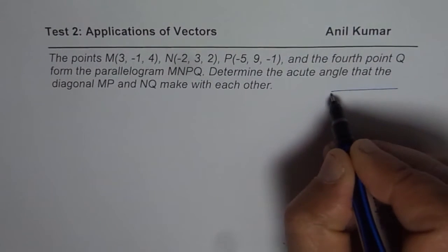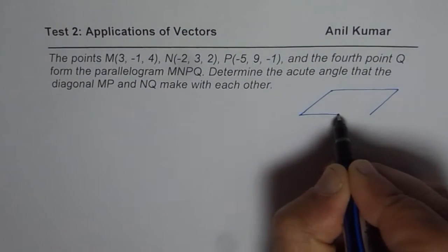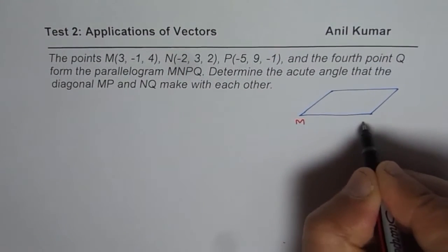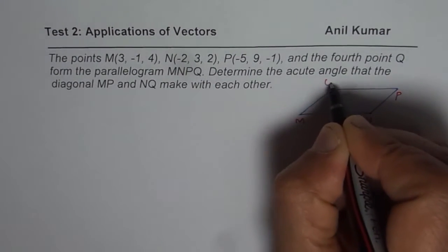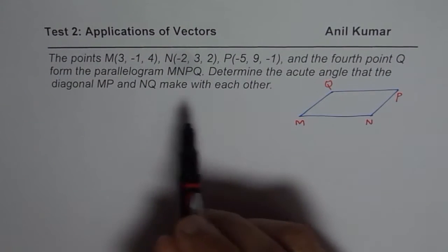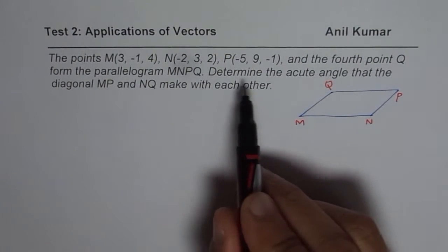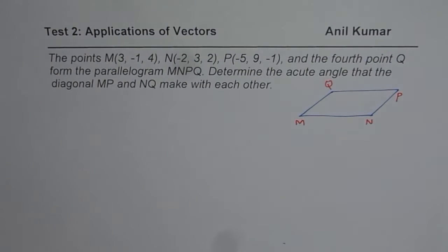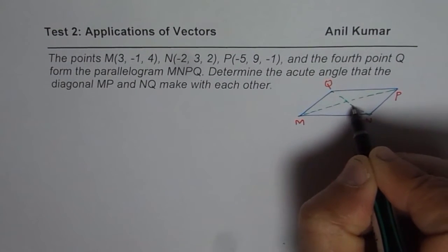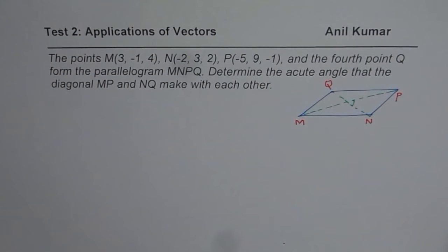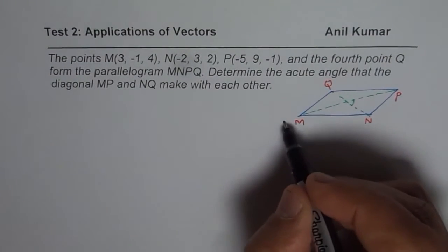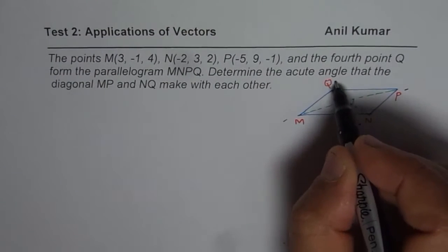So let us sketch one parallelogram and then solve. So let us say this is the parallelogram which is MNPQ. So always number them counterclockwise. That is one key thing which will always help you to answer correctly. So these are the points given to us. Determine the acute angle that the diagonals MP and NQ make. So that is one diagonal and that is the other one. So we need to find the acute angles between them. Now even before finding the acute angle, we are only given three points M, N, and P. We need to find what Q is.